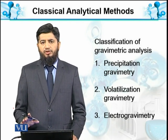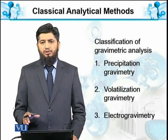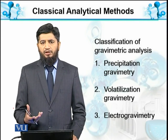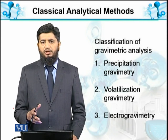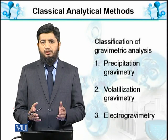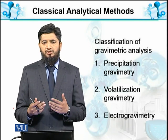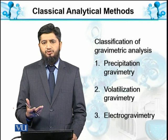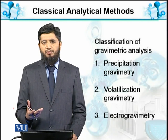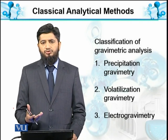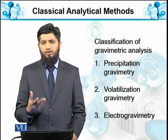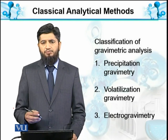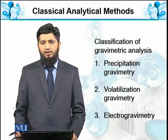تینوں قسم کی gravimetry میں ہم اپنے analyte کو chemical transform کریں گے۔ اگر وہ precipitate out ہونے کے قابل ہو — یعنی precipitation ہو جائے — chemical composition اس طرح change ہو جائے کہ ہمارا پہلے soluble material اپنے solvent کے اندر soluble نہ رہے اور precipitate out ہو جائے، تو اسے precipitative gravimetry کہیں گے۔